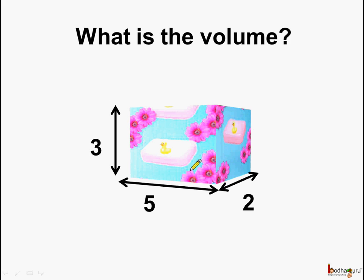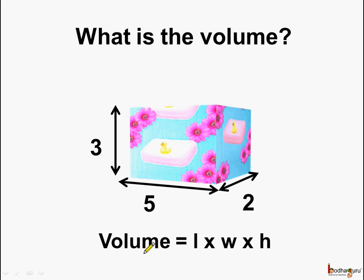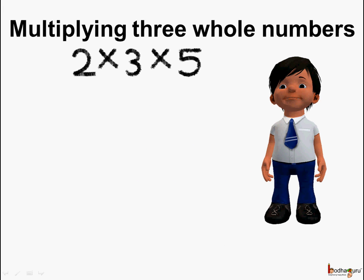What is the volume of this soapbox? Here the height is 3 units, the length is 5 units, and the width is 2 units. We know the formula for volume — it is equal to length multiplied by width multiplied by height. So to get the volume we need to multiply these 3 whole numbers. This is the way Amand did it: he multiplied 2 and 3 first, then he multiplied 5.